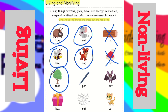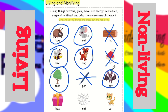Next is pen — pen is a non-living thing because it can't move without the help of a human. Bat is a living thing because it can breathe and move. Box cannot move by itself, so it is a non-living thing.